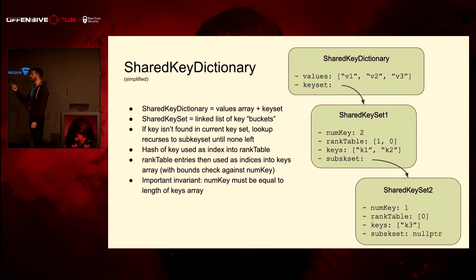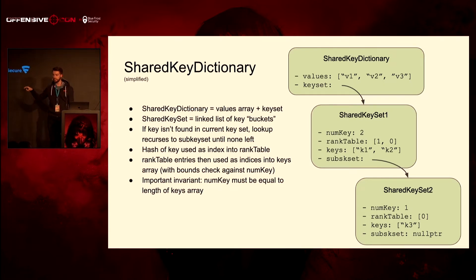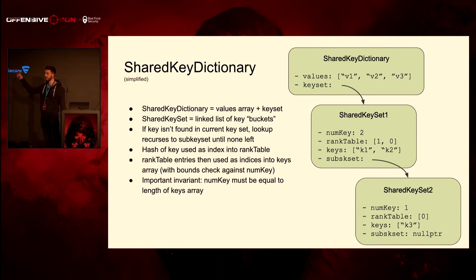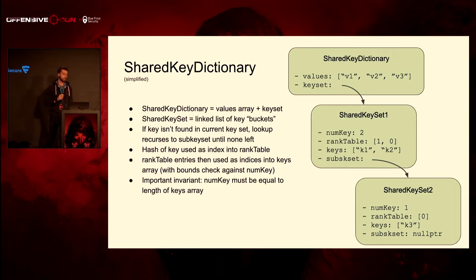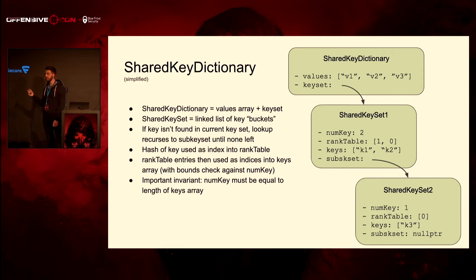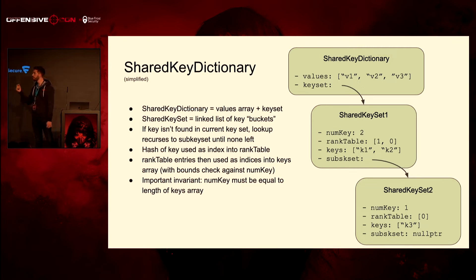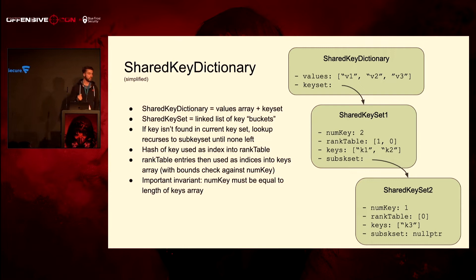In this case, it wouldn't find the key K3 in the first key set, so it would go to the second key set, do the same thing, find K3, and that's the index for the values array in the shared key dictionary. The only important invariant here is that num_key must be equal to the length of this array. If that's not the case, then the rank table stuff can index out of bounds.